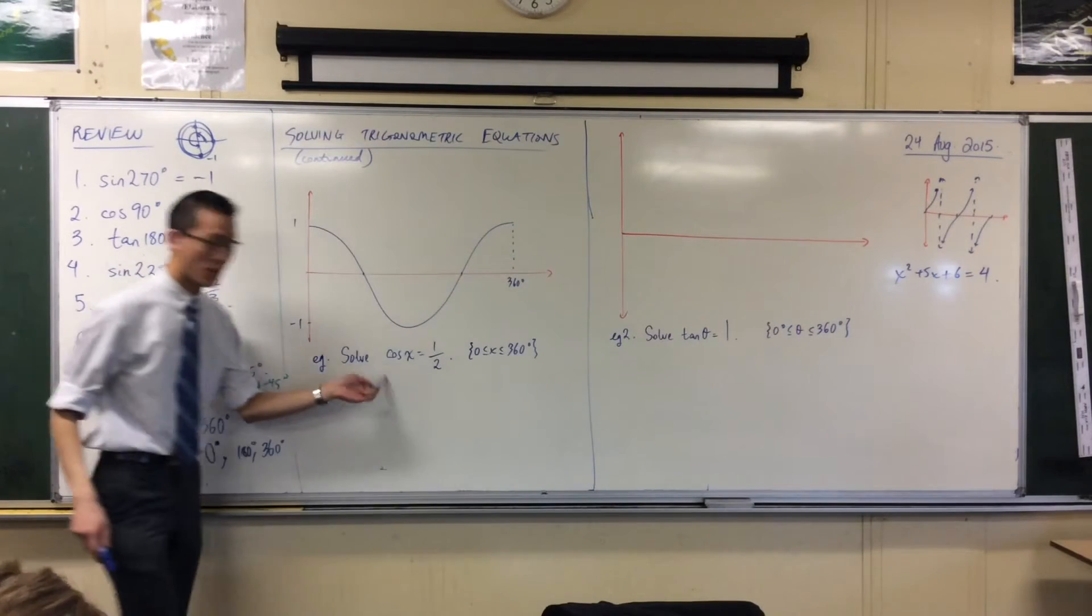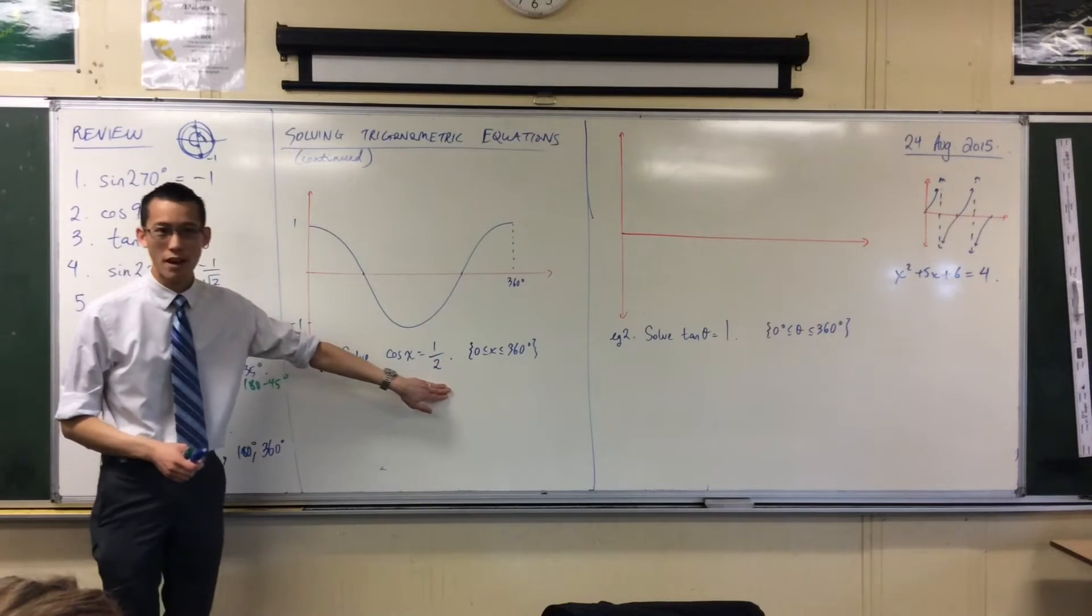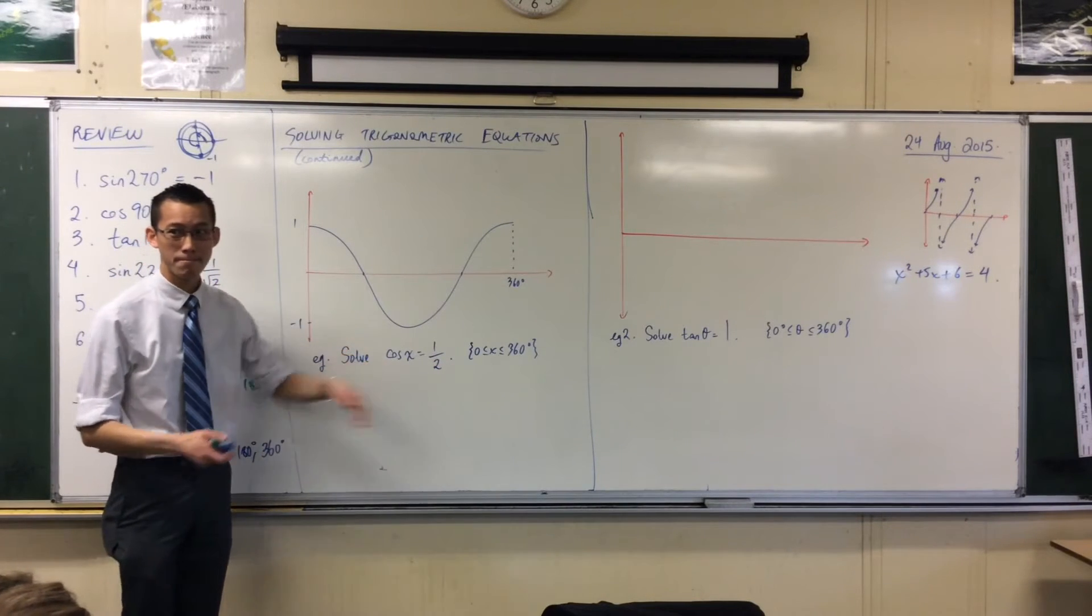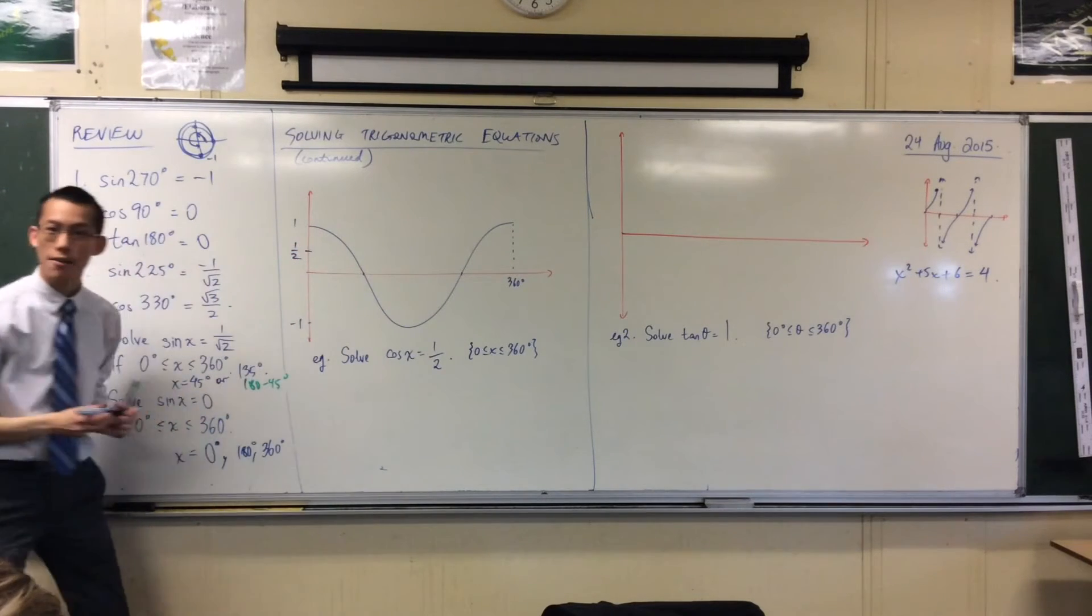So cos x, there's my cos x graph. What else should I put on here if I've got this on the right-hand side? That's 1. So I've got a half there.